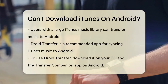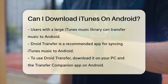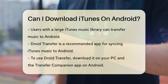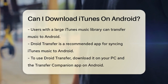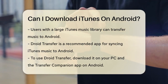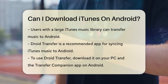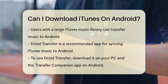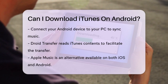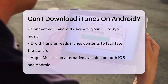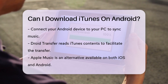However, if you have a large music library in iTunes and you've recently switched to an Android device, there are ways to transfer your music. One of the best methods is using an application called Droid Transfer. This app allows you to sync your iTunes music library with your Android device. You download Droid Transfer on your PC and the Transfer Companion app on your Android device. Connect your Android device to your PC, and Droid Transfer will read your iTunes contents and sync the music between your iTunes library and your Android device.